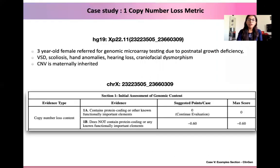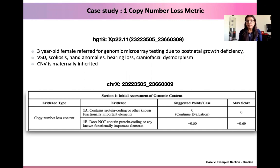Today we'll be looking at a 440 KB approximate deletion which was referred in a three-year-old female. The clinical symptoms of the female were postnatal growth deficiency, ventricular septal defect, scoliosis, hand anomalies, hearing loss, and peniofacial dysmorphism. It was also known that the CNV is a maternally inherited CNV.